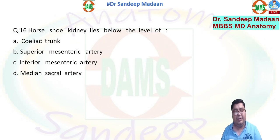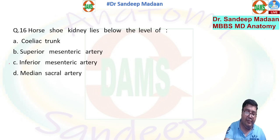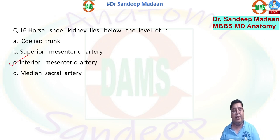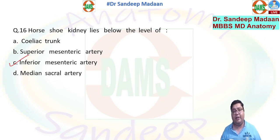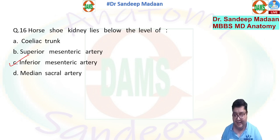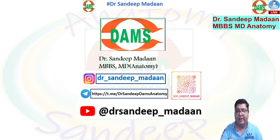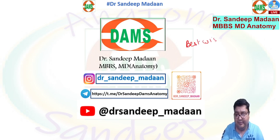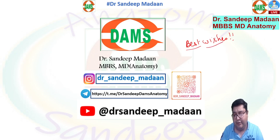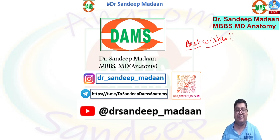Horseshoe kidney lies below the level of the inferior mesenteric artery. This is a straightforward question — they may ask which artery blocks the ascent of the horseshoe kidney, and the answer is the inferior mesenteric artery. That was all, dear friends. Keep preparing well. Always remember: you can do it, and you are going to do it this time. Thank you so much.